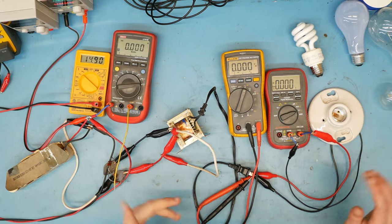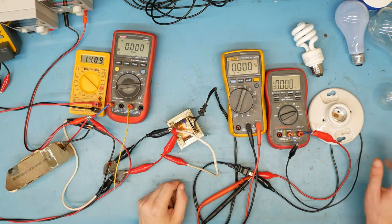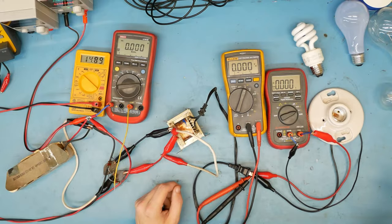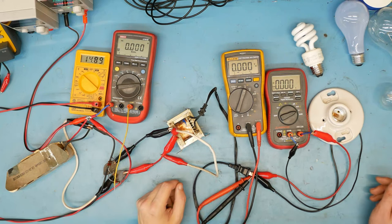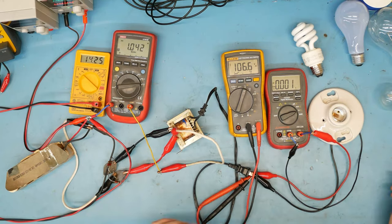That seems fine now. So the Fluke multimeter is going to monitor the voltage delivered to the light bulb.